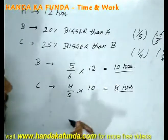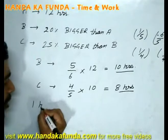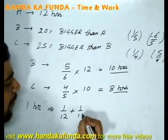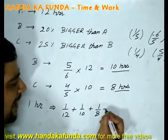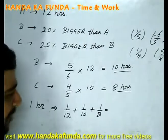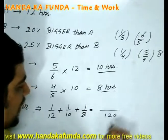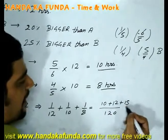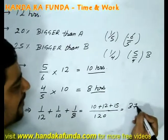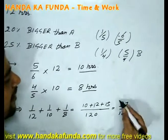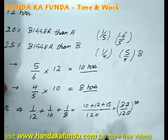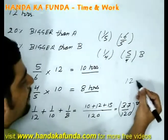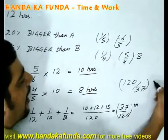Together, we need to calculate on a 1-hour basis. A fills 1/12 in 1 hour, B fills 1/10 in 1 hour, and C fills 1/8 in 1 hour. Adding these with LCM 120: that is 10 plus 12 plus 15, giving 37/120 of the tank per hour. The time taken by all three working together to fill the tank will be 120/37 hours.